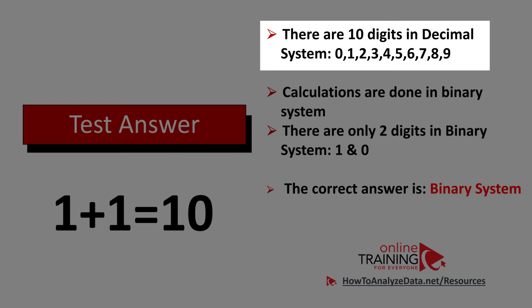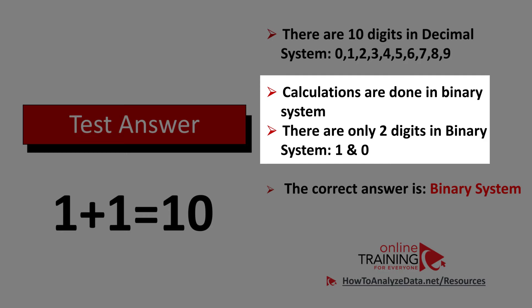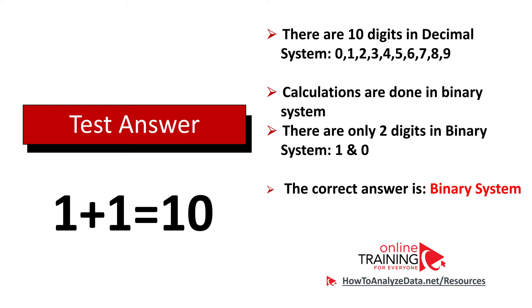Typically when we do calculations we use 10 digits in the decimal system: 0, 1, 2, 3, 4, 5, 6, 7, 8, and 9. But here, calculations are done in the binary system, and there are only two digits in the binary system: 1 and 0. So when you add 1 plus 1 in binary, what looks like 10 in decimal is actually 2 in the binary system. The correct answer is that this calculation is possible because of the binary system.